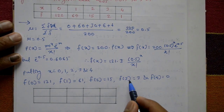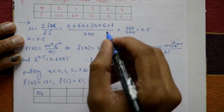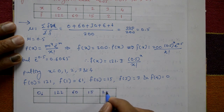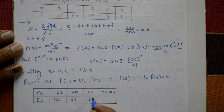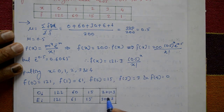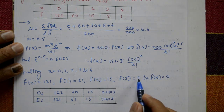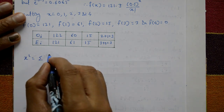The observed frequencies (Oi) are: 122, 60, 15, and 2+1 = 3. The estimated expected frequencies (Ei) are: 121, 61, 15, and 3+0 = 3. Since the last expected frequency is 0, we club the last two values together: 2+1 = 3 observed and 3+0 = 3 expected.